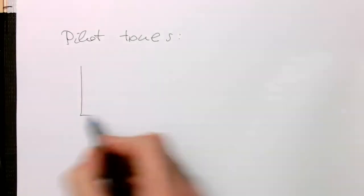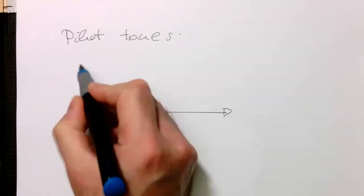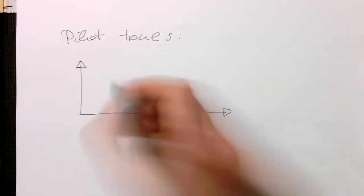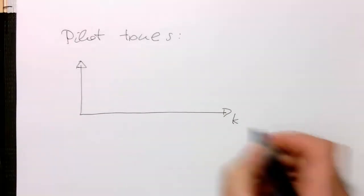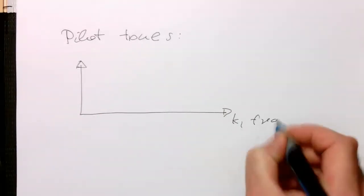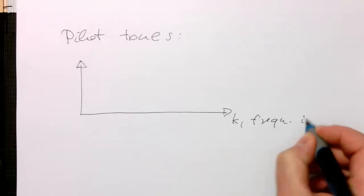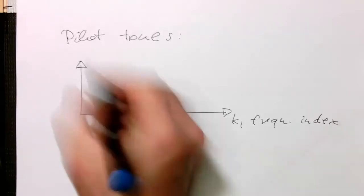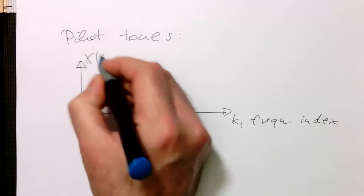So here we've got our spectrum, so that's here our frequency index, and that's here x of k.